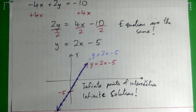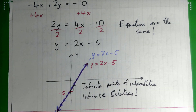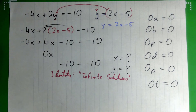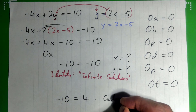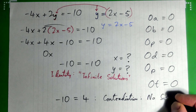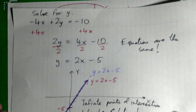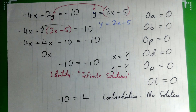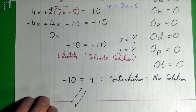So the answer is infinite solutions. For a test, I'd recommend graphing the lines just to be sure, rather than memorizing 'identity equals infinite solutions.' There's also the other case: if you get something like negative 10 equals positive 4, that's a contradiction, which means no solution. That would correspond to parallel lines that never meet — we'll see that in the next example.